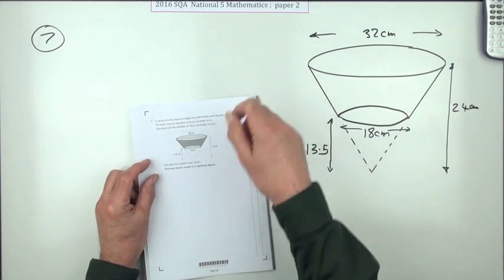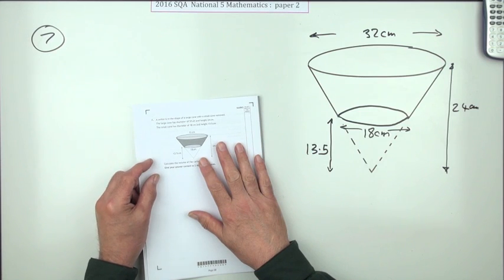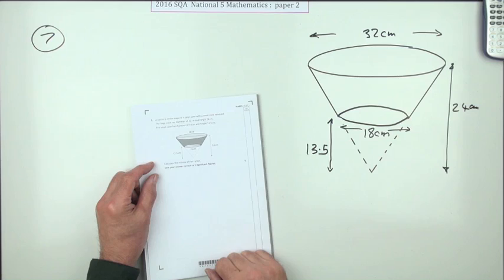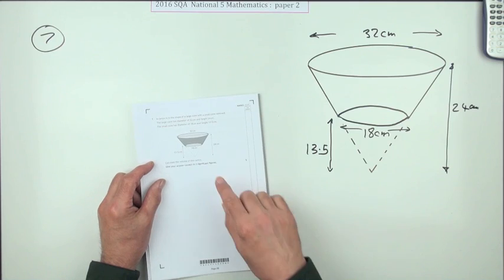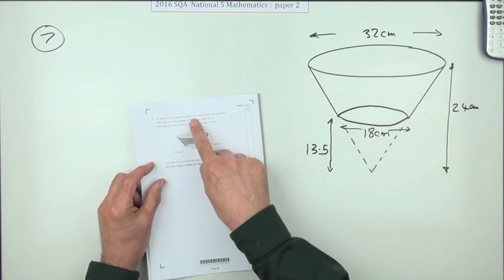Number seven from paper two of the 2016 National Five. Here we go, volume question, five marks. It's a compound volume because it's made up of two parts, but it tells you, it's giving you the clue that